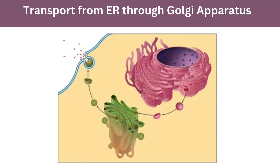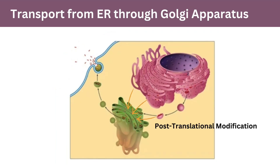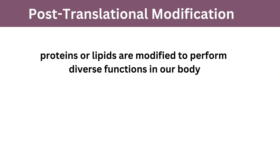The vesicles containing proteins and lipids coming from the endoplasmic reticulum empty into the cis phase of the Golgi apparatus. While transporting through the Golgi, these proteins are modified — a process we call post-translational modifications.